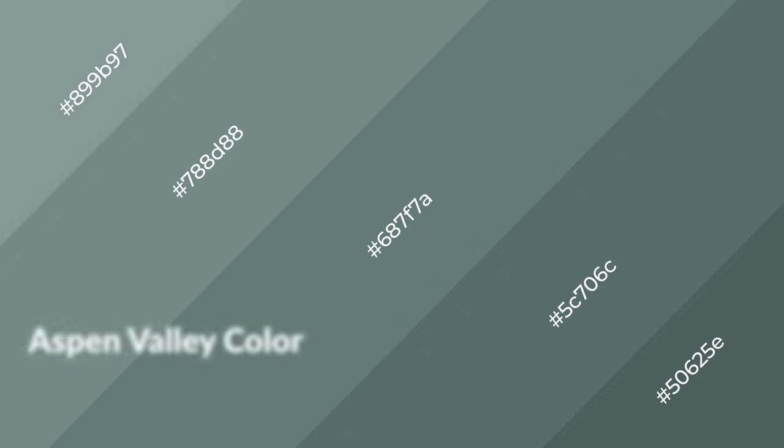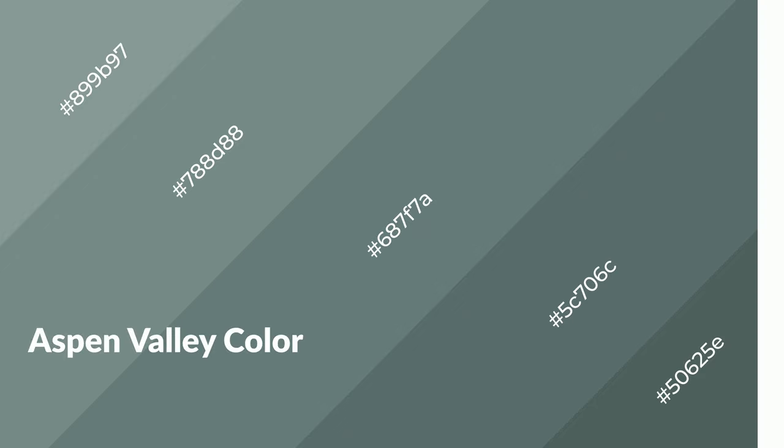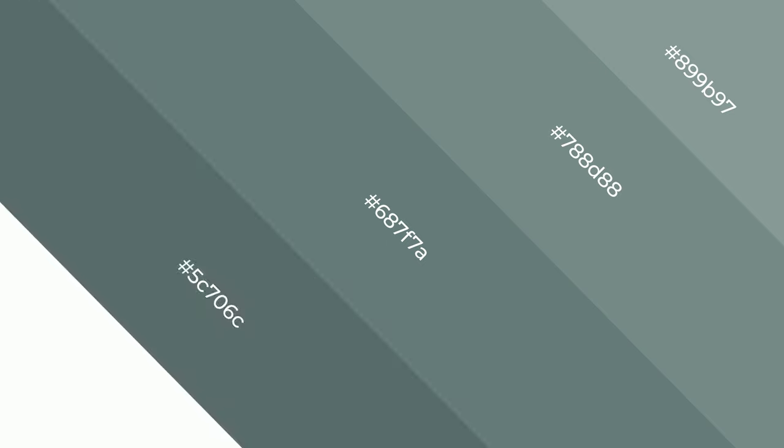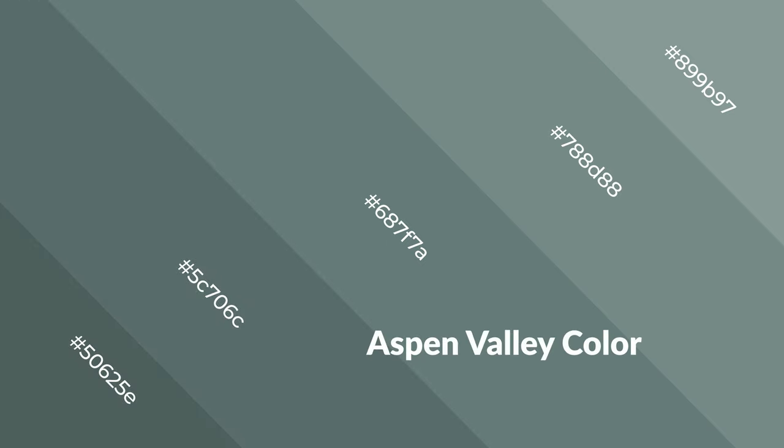Aspen Valley is a cool color and it emits calming, serene, soothing, refreshing, spacious, unwinding, peaceful, and relaxed emotions. Cool colors are like water, ice, sky, grass, soft, and snow. You can see them used in baby products.